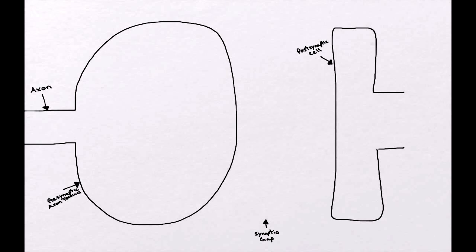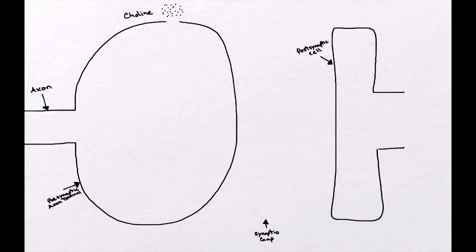In order to start with some of the anatomical parts of the cholinergic synapse, we need to talk about some of the physiology behind it. That will help us explain later on how some of the medications that we use work, where they work, and why they work. So it's important to have this background.